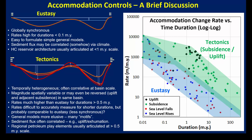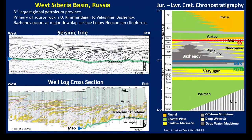The first example is from the West Siberia Basin, the world's third largest global petroleum province. The primary source rock is the Bajonov. This is a chronostratigraphic diagram centered in the Tithonian, ranging from upper Kimmeridgian to Valanginian. The Bajonov occurs at a very large-scale downlap surface visible on seismic lines and well cross-sections spanning several hundred kilometers, with clinoforms having several hundred meters of relief. The Bajonov is a diachronous unit that in the center of the basin doesn't pinch out until towards the end of the Valanginian.